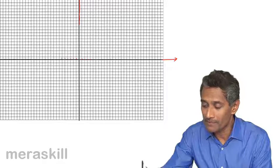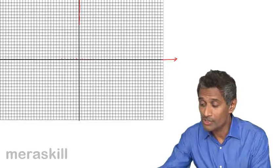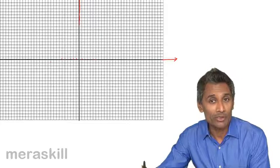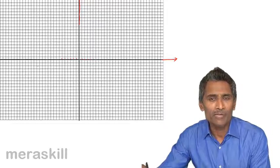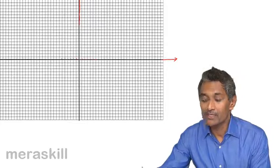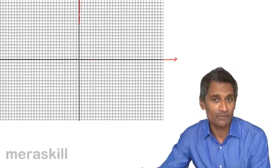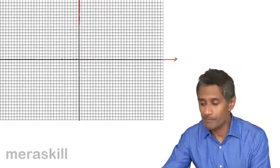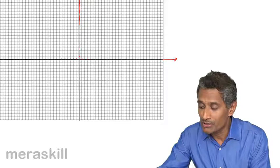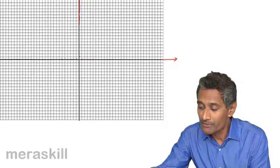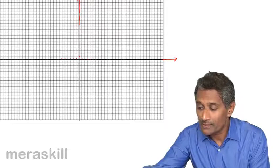To the right of the point of intersection, called the origin, are all the positive values, and to the left of the origin are all the negative values of x. We call them coordinates. There are infinite values of x on the left and infinite values on the right. Right of the origin you have all positive coordinates of x; left of the origin you have all negative coordinates of x. Similarly, on the y-axis, the vertical axis, we have 1, 2, 3, 4, 5, 6, 7, 8, 9, 10 and so on — this is the positive part of the y-axis.